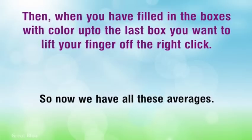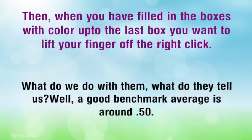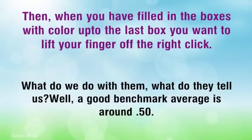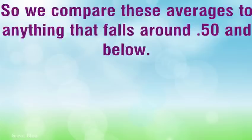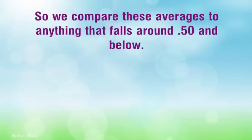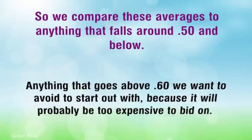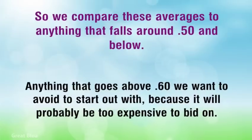Now we have all these averages — what do we do with them? What do they tell us? Well, a good benchmark average is around .50. We compare these averages to anything that falls around .50 and below. Anything that goes above .60 we want to avoid to start out with, because it will probably be too expensive to bid on.